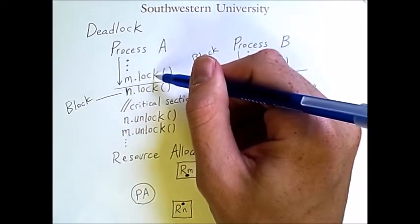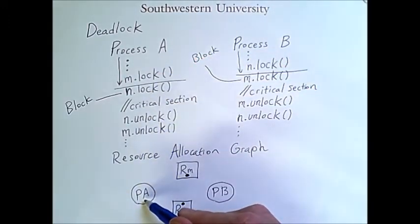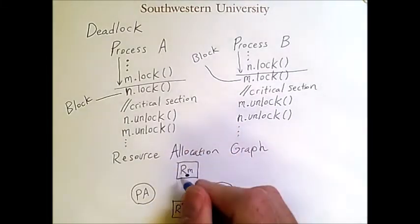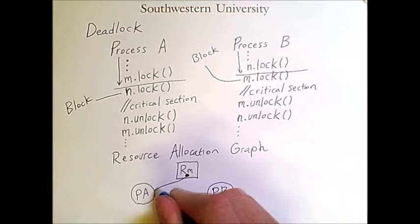we say that A has successfully claimed the resource M and therefore we draw an arrow from this dot to the process.